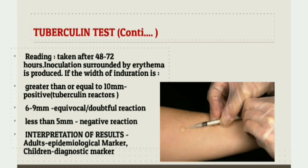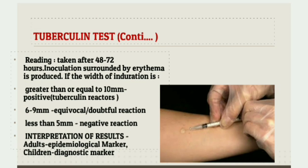Results are read after 48 to 72 hours. At the site of inoculation, an induration surrounded by erythema is produced. If the width of induration is greater than or equal to 10 mm, it is positive or tuberculin reactor. If the width of induration is between 6 to 9 mm, it is equivocal or doubtful reaction. If less than 5 mm, it is a negative reaction. In adults, a positive tuberculin test only indicates present or past exposure to the tubercle bacillus but does not confirm active disease — hence it is only used as an epidemiological marker. But in children, a positive test indicates active infection and is used as a diagnostic marker.